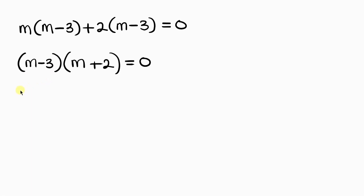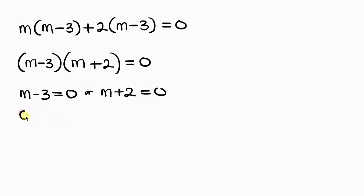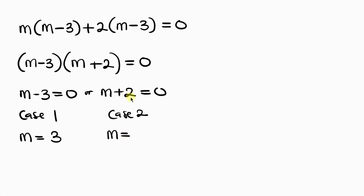We now have two cases. Case 1: m minus 3 equals 0, so m equals 3. Case 2: m plus 2 equals 0, so m equals negative 2.